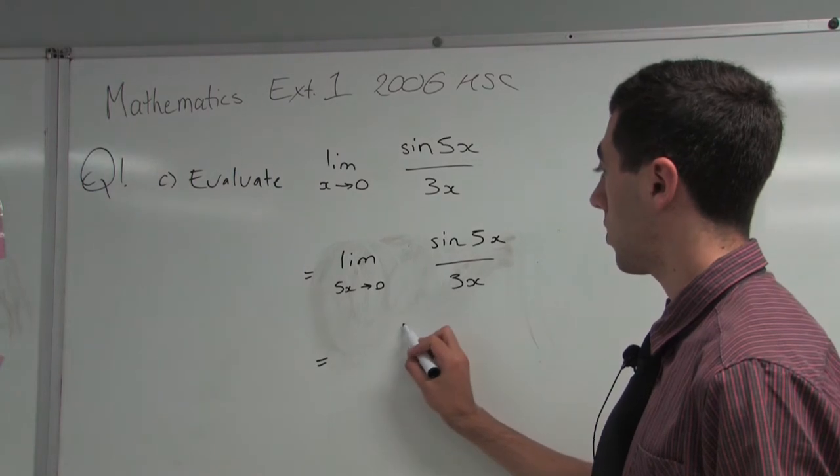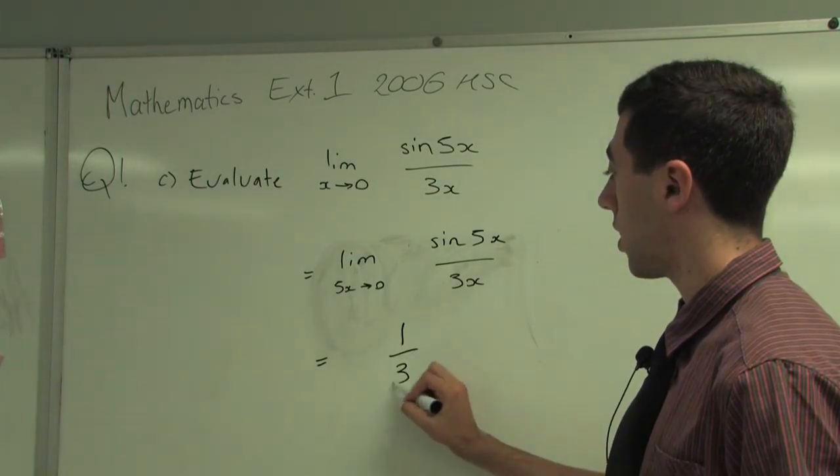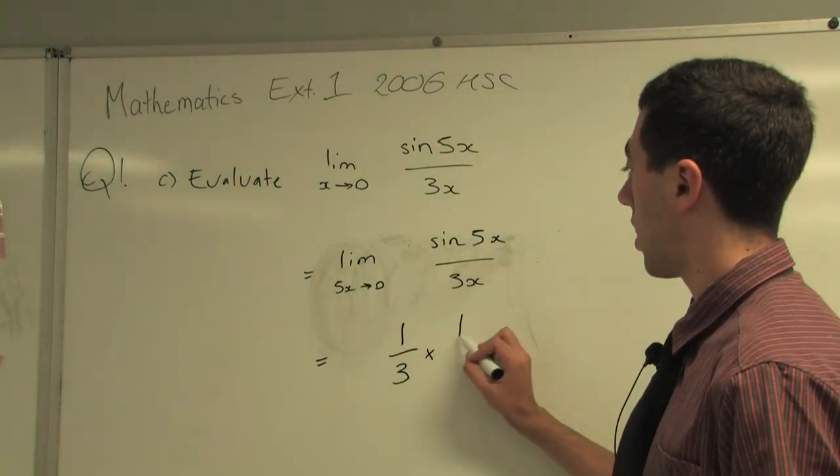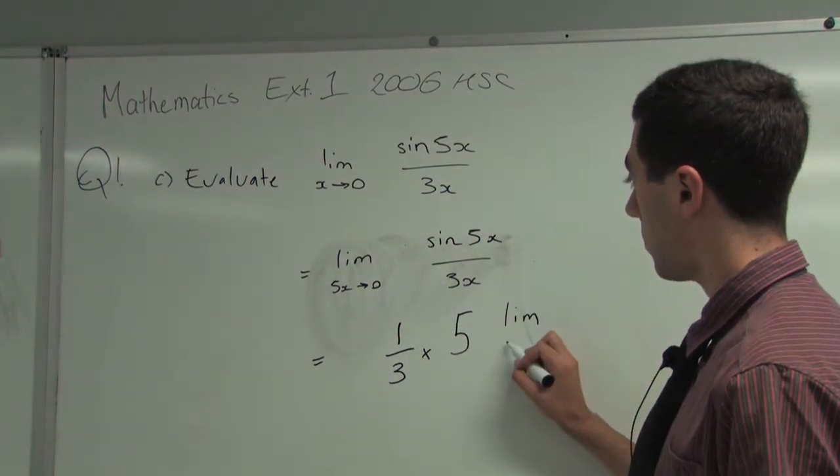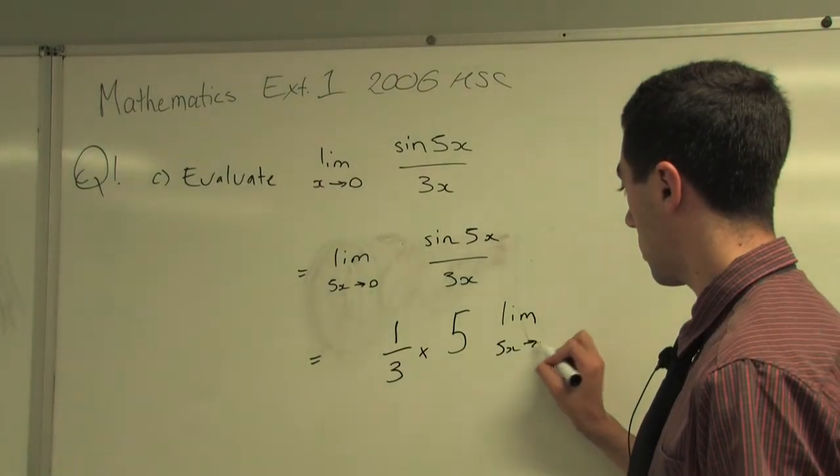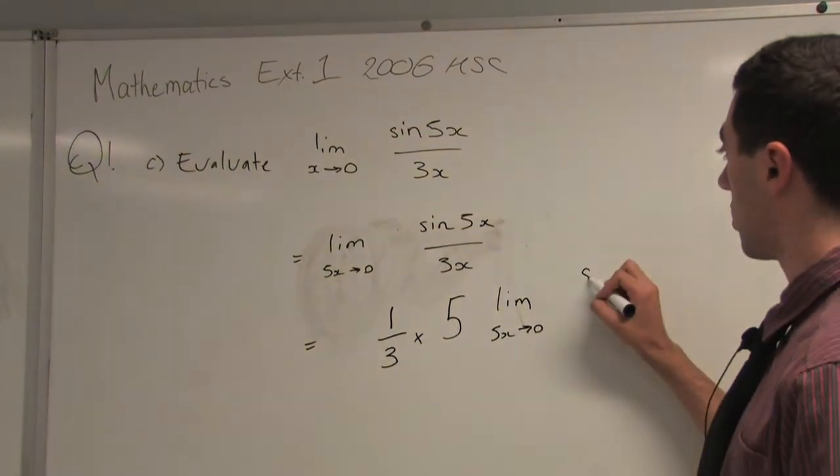now we take the 3 out and we also have to include a 5 because we want 5x to be on the bottom.